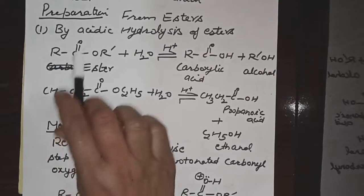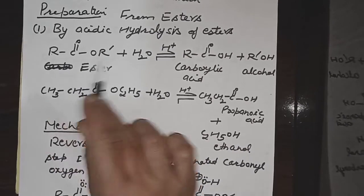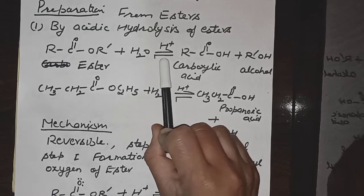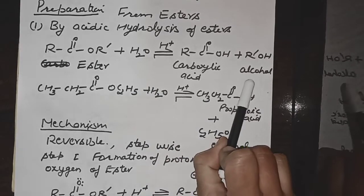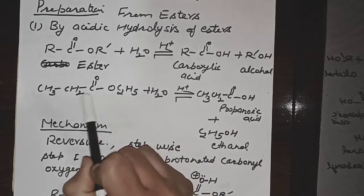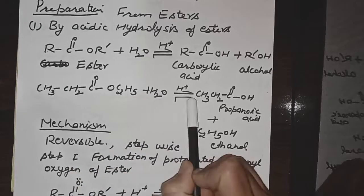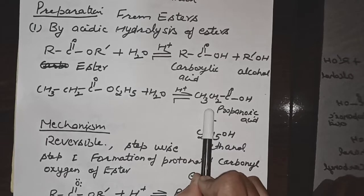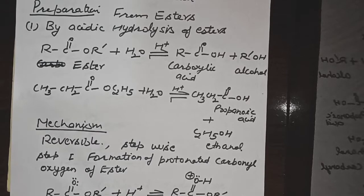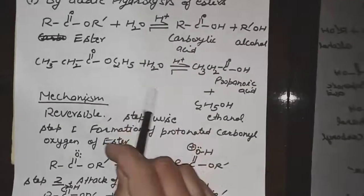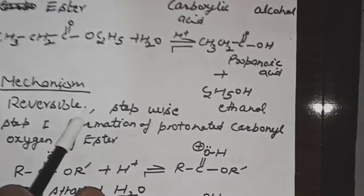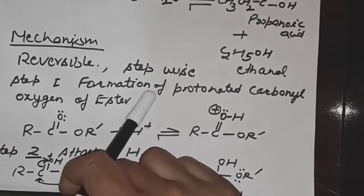An ester is represented as RC(=O)OR', where the alkyl groups can be the same or different. When esters are treated with water in the presence of acid, we get carboxylic acid and alcohol. For example, ethyl propanoate when treated with water in the presence of acid gives propanoic acid and ethanol. Note that acid hydrolysis is a reversible reaction and it occurs in a stepwise manner.